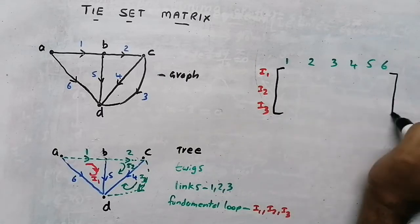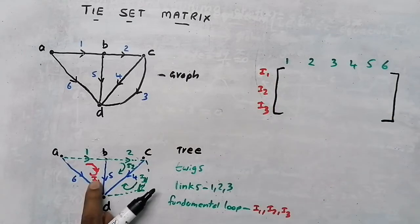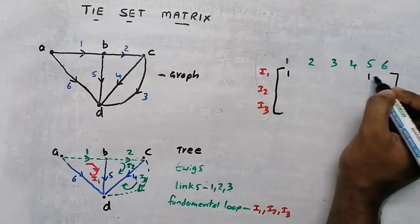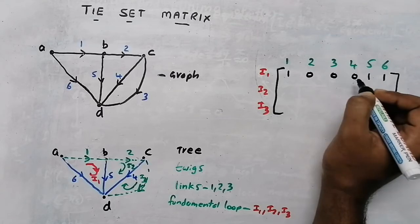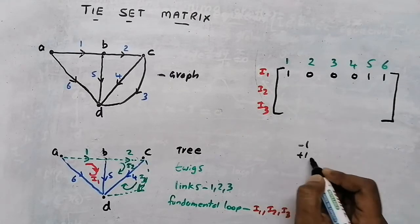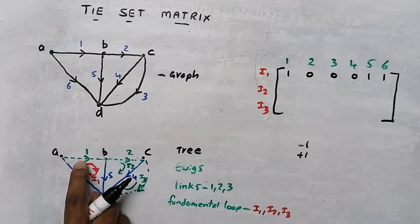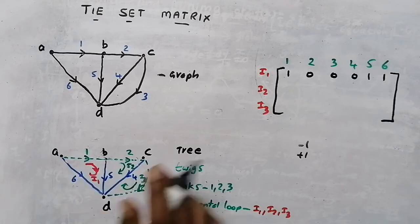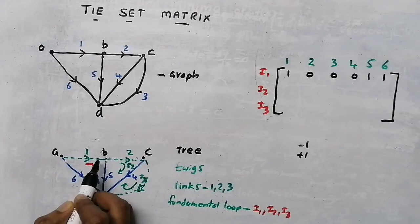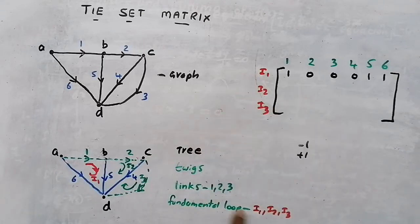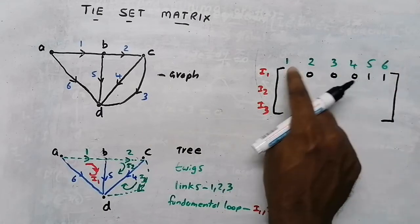Take loop I1. Which branches are connected in I1? Branches 1, 5 and 6. So near 1, 5 and 6 we put 1; all others are 0. Now we need to know whether it is negative 1 or positive 1. For that, look at the link current direction. If the link current and branch current direction are the same, we put positive 1; if they are opposite, we put negative 1. In I1, the link current direction is clockwise. Branch 5 direction is also clockwise, so it is positive. But branch 6 direction is anticlockwise — opposite to the loop current — so we put negative 1 near branch 6.